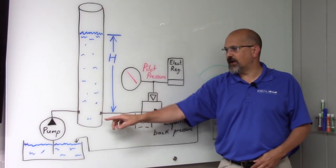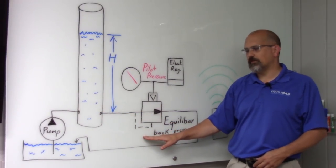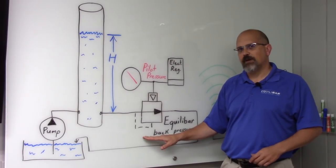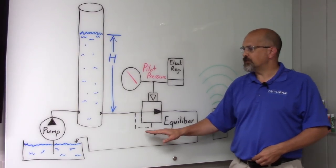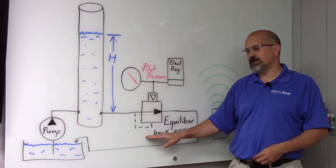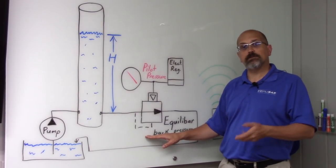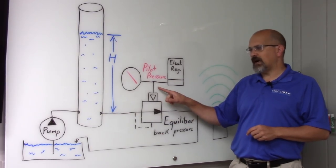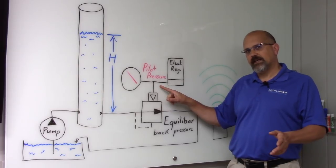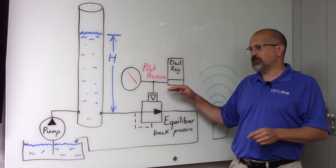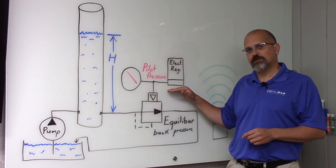The pressure in that column is going to be controlled by the Equilibar high resolution back pressure regulator. The Equilibar high resolution back pressure regulator receives its command or set point from an air pilot signal, and in the case of the demo, that air pilot signal is going to be coming from an electronic pressure regulator.